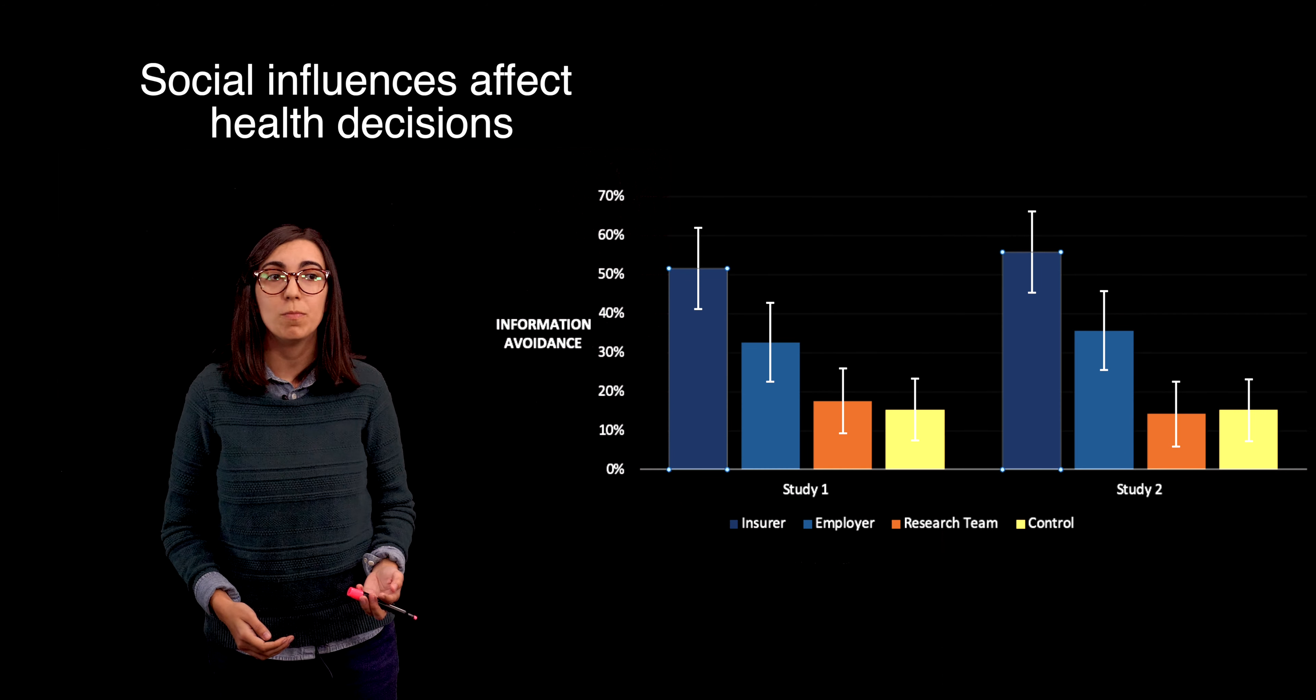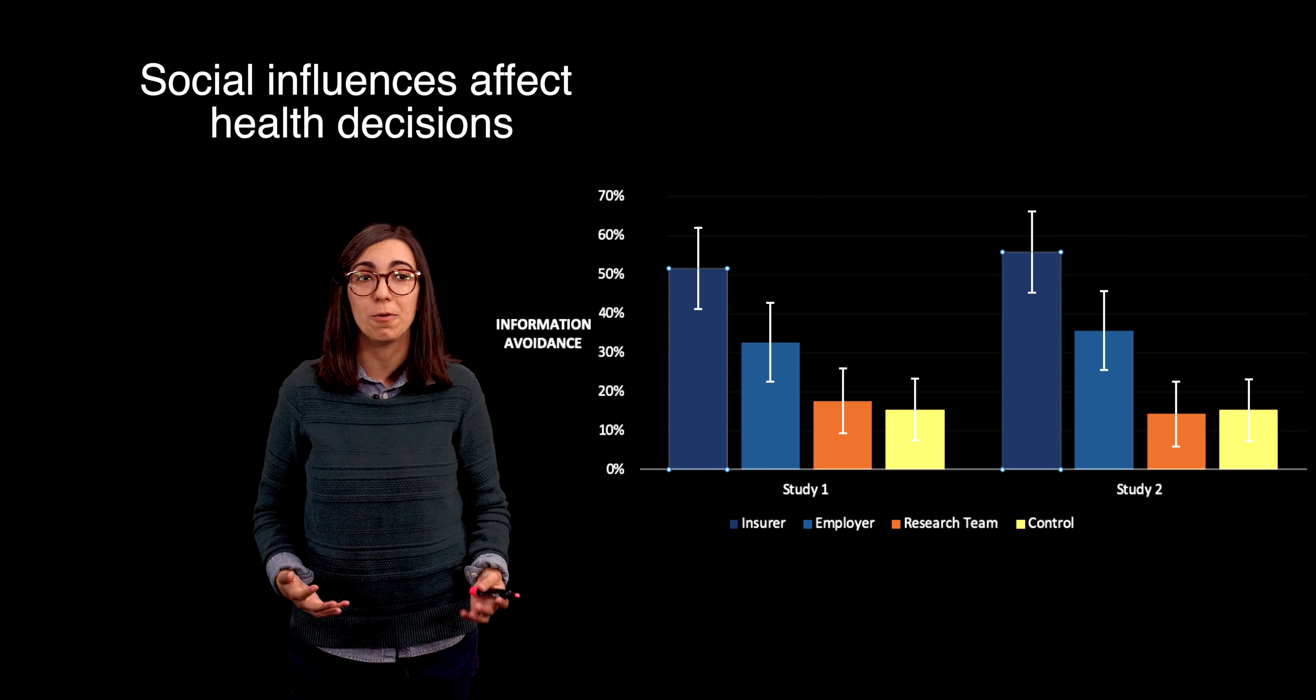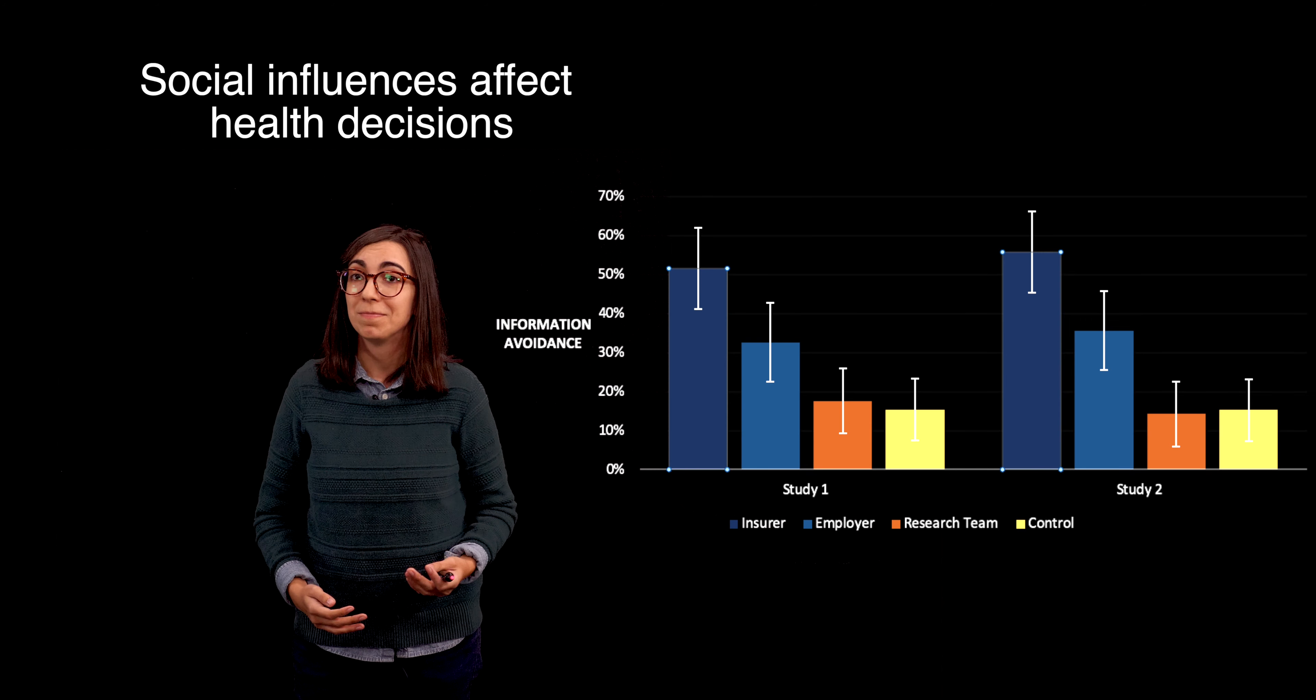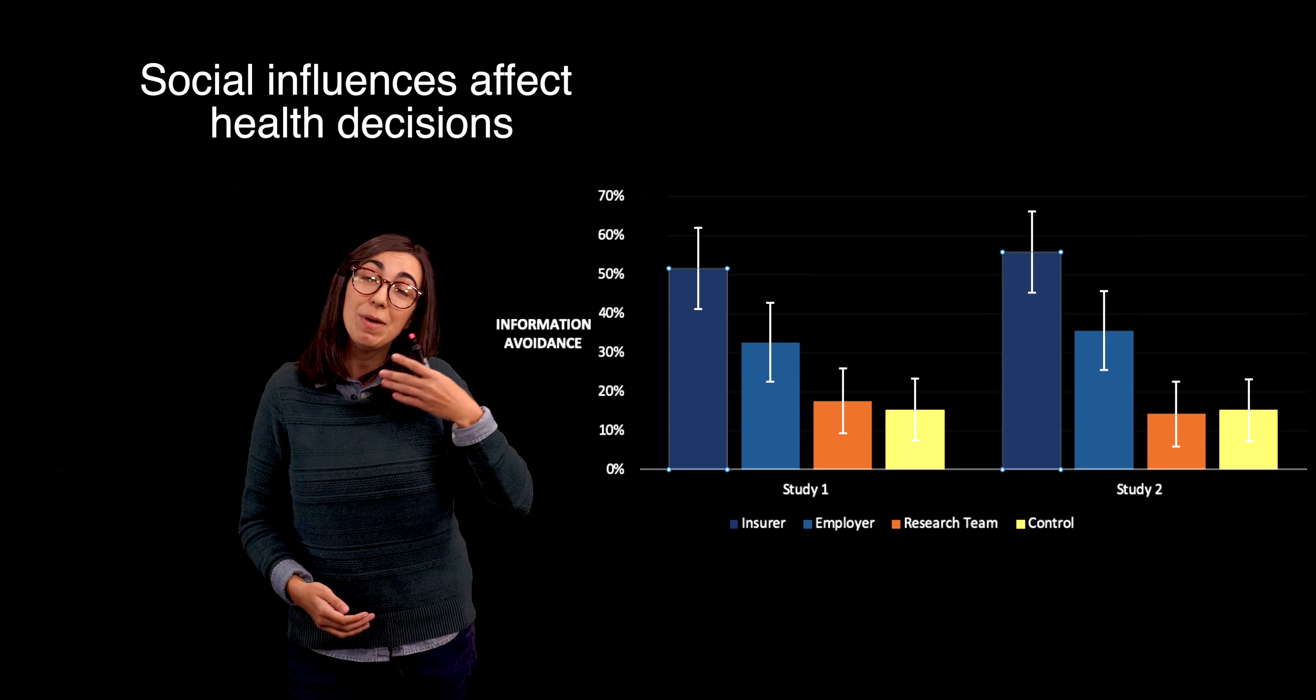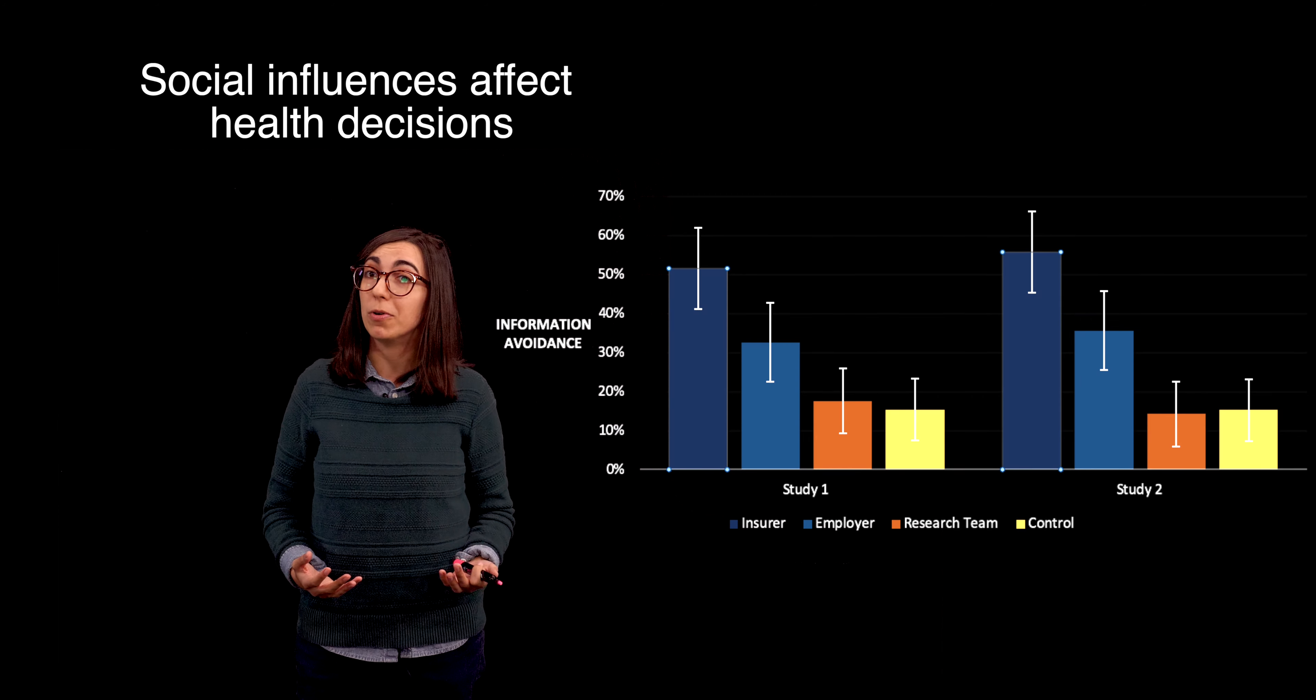So, what's the take-home point? As this research illustrates, our health decisions are influenced by other people. But not all people influence us equally. How much power people have, how much we trust them, and many other characteristics can affect just how influential these people are.